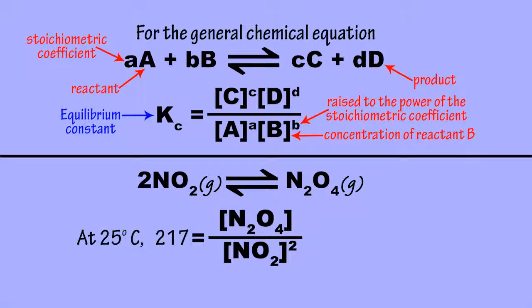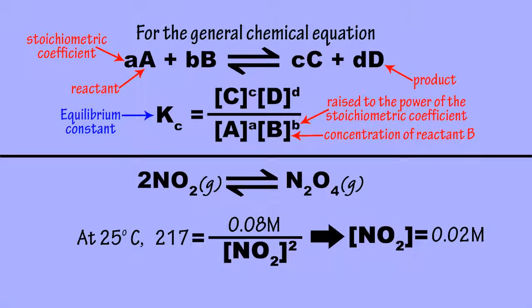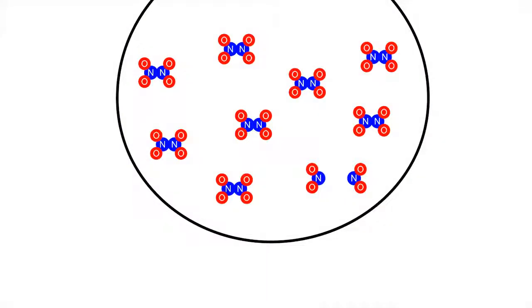At 25 degrees Celsius, the equilibrium constant for this reaction has a value of about 217. What this means is that a final equilibrium mixture containing, for example, a 0.08 mol per liter concentration of N2O4 will still have about a 0.02 mol per liter concentration of residual NO2, or for approximately every four molecules of N2O4, one molecule of NO2.